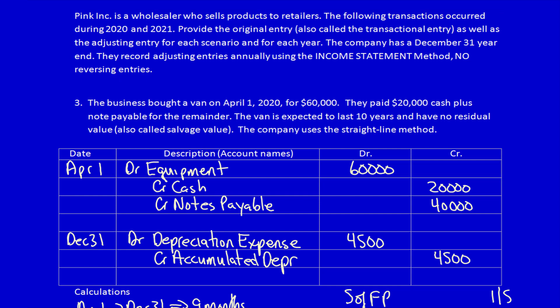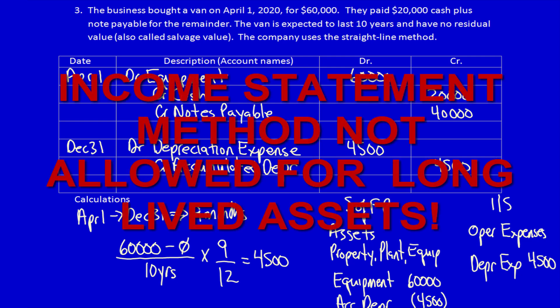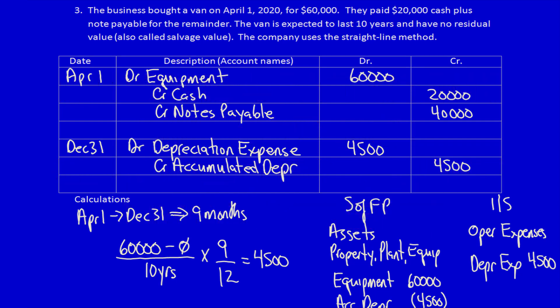Now I'm going to page down. You probably noticed something really interesting — this is already filled out, and it looks like the balance sheet method. Why? Because you cannot use the income statement method on any long-lived assets.